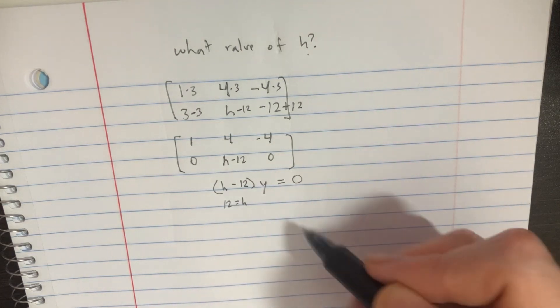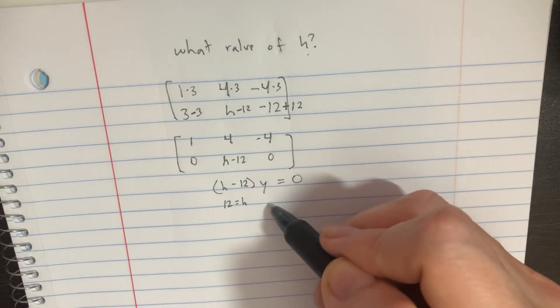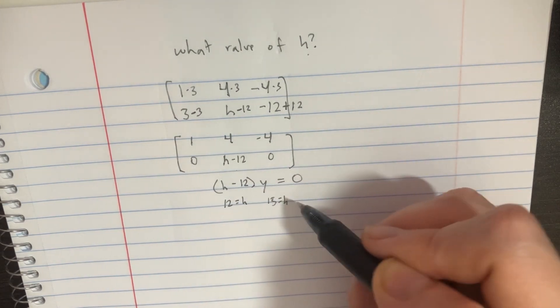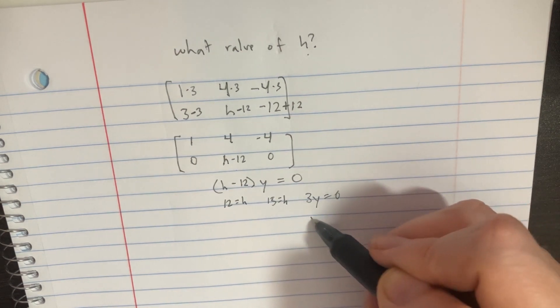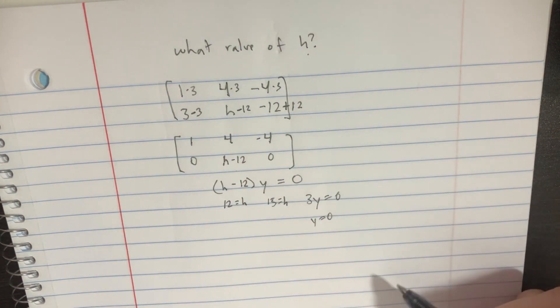But technically you can put any number in there. So you could put 15 in there, and then this would be 3y equals 0. Well, y would just equal 0, and this would also work.